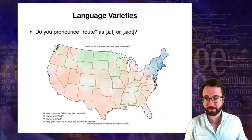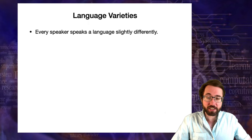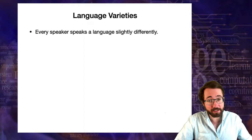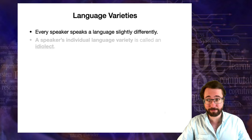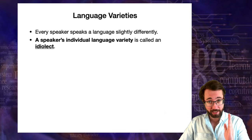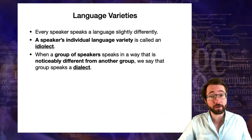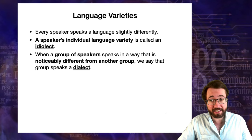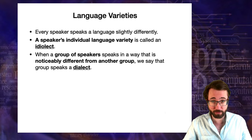To summarize the structure of this variation: every speaker speaks a language slightly differently. A speaker's individual language variety is called an idiolect — your particular way of speaking any language is your idiolect, and everyone has a slightly different one. When a group of speakers speaks in a way noticeably different from another group, we say that group speaks a dialect. A dialect is a language variety spoken by a group that is noticeably different from another group's variety. A group of people that speaks a dialect is called a speech community.